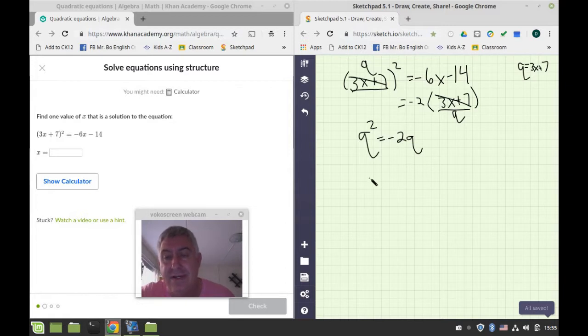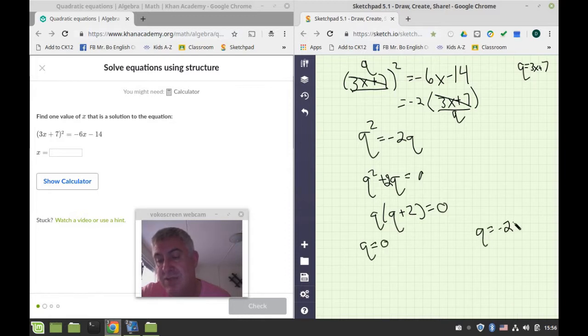So I know that q squared plus 2q is equal to 0, or q times q plus 2 is equal to 0, so I know q is equal to 0, or q is equal to negative 2, and we do that all the time, and it looks like we're done. That was really easy to solve, right? Much easier to solve than this one up here, but we're not done yet. We're going to substitute the x back in.